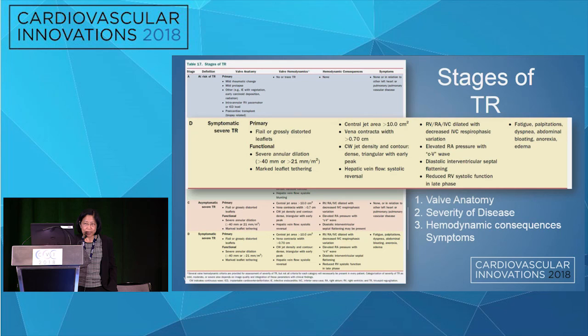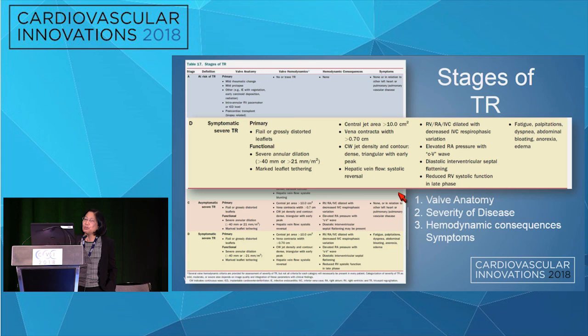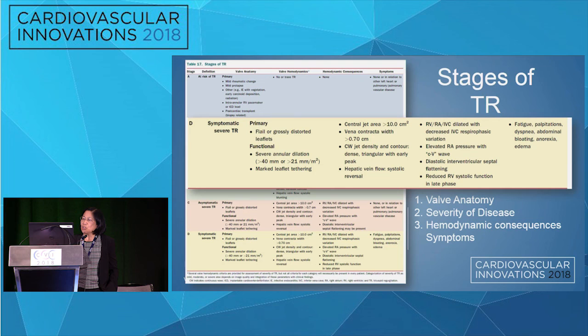The hemodynamic consequences and symptoms are vague: fatigue, palpitations, dyspnea, bloating, anorexia, and edema. Regarding jet area — which we'd like to move away from — there are all these different measures of severity of tricuspid regurgitation, but they have major limitations. The tricuspid regurgitant jet is typically all along that septal commissure, meaning it's crescent-shaped in a large percentage of cases. Any single measure of width can be very misleading — you might see a big width and think it's torrential, or a narrow width and think it's only mild disease.